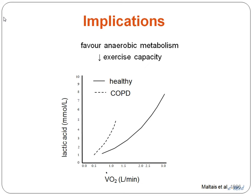What does all this mean? These patients favour anaerobic metabolism. Looking at oxygen uptake on the x-axis and lactate on the y-axis: a healthy individual can get quite far into exercise before seeing the inflection point where lactic acid starts accumulating. But in COPD, they're producing it very early in exercise — unusually steep. Even during activities of daily living, these patients produce huge amounts of lactic acid, which drives their ventilation and makes them very breathless.